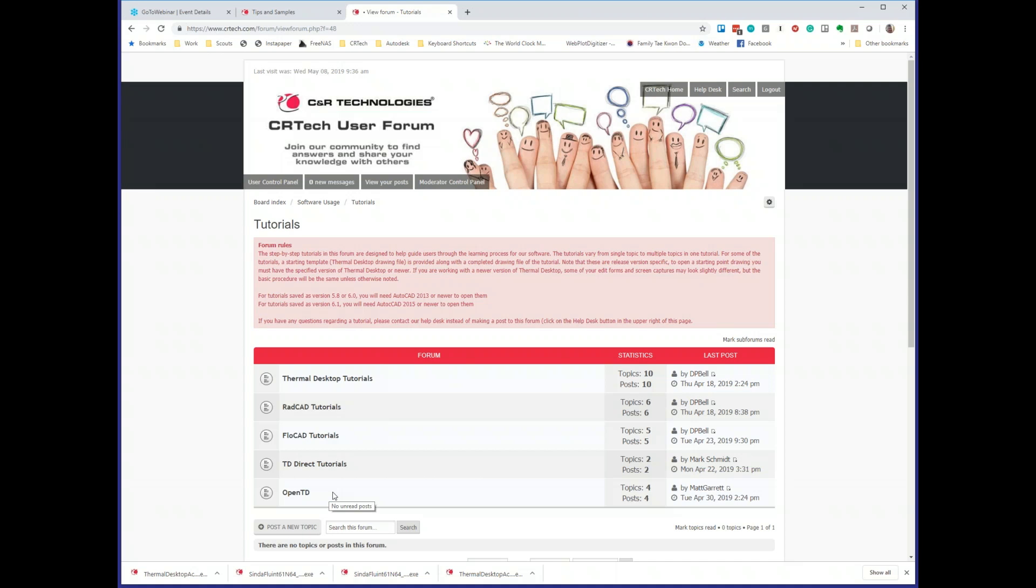If you're using an older version, they're still in your user's manual. They're still in the install directory. But once you go to 6.1, we're not installing the files directly on your computer and we're not including those in the manual. So you can come here and find those.